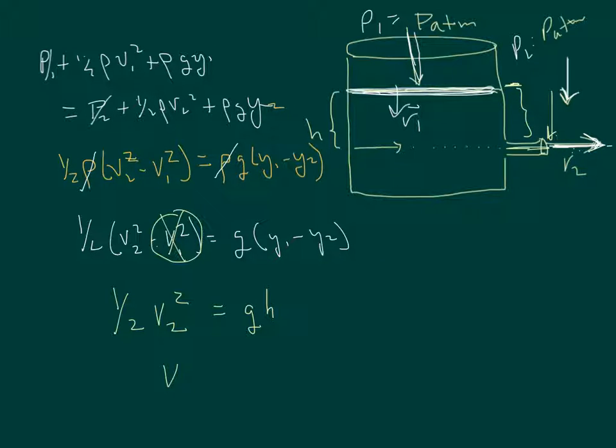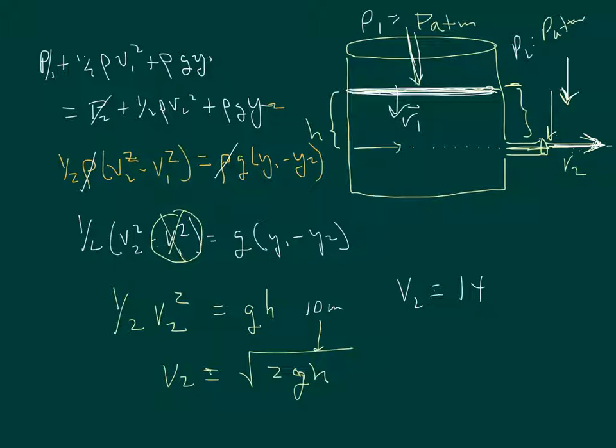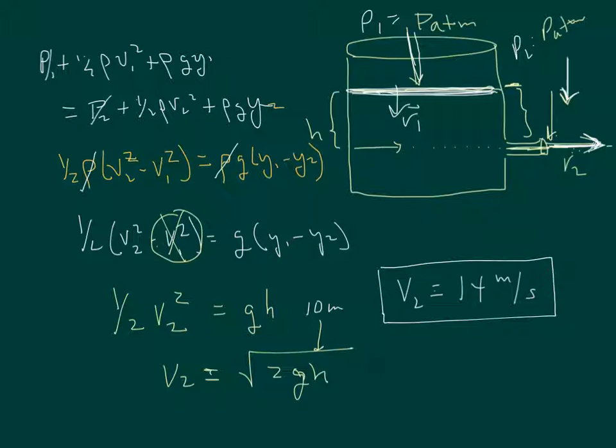And so we wind up then with v2 is going to be equal to the square root of 2 times g times the height of the water as it began, or the height above the spigot coming out. Just for some numbers, if we let the height be 10 meters, which would be about 30 feet, g is 9.8 times 2, and take the square root of that, then we would have the velocity coming out at around 14 meters per second. And that's a little over 30 miles an hour. So a 30 foot tank of water with an orifice here would be coming at it at around 30 miles an hour.